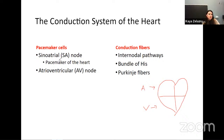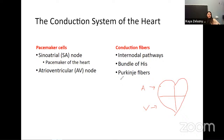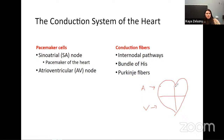We're going to have a sinoatrial node — the pacemaker of the heart — up in the right atrium. It has the fastest pace and controls the others. We'll have a backup, the AV node (atrioventricular node), down on the border with the ventricles. Then we have conduction fibers connecting all of these: our internodal pathways, our bundle of His, and our Purkinje fibers.